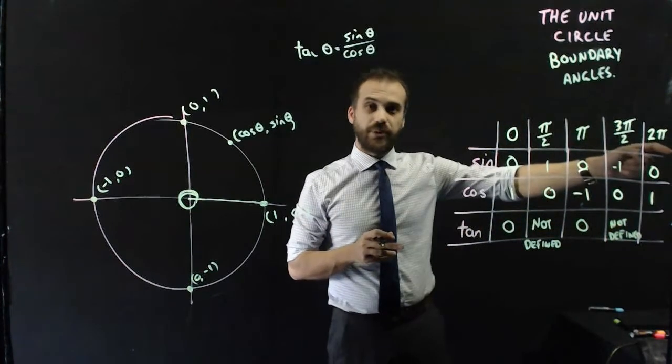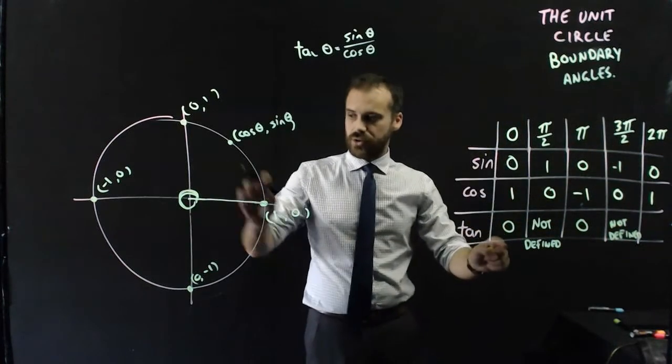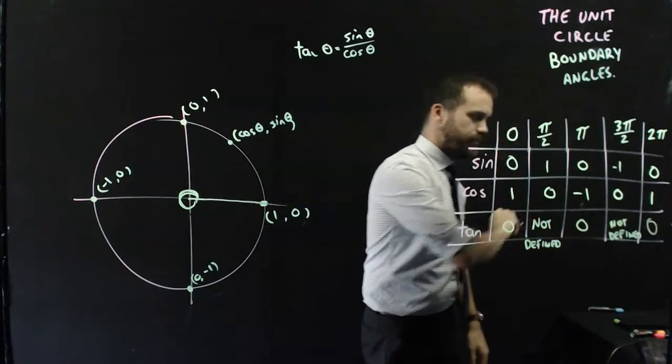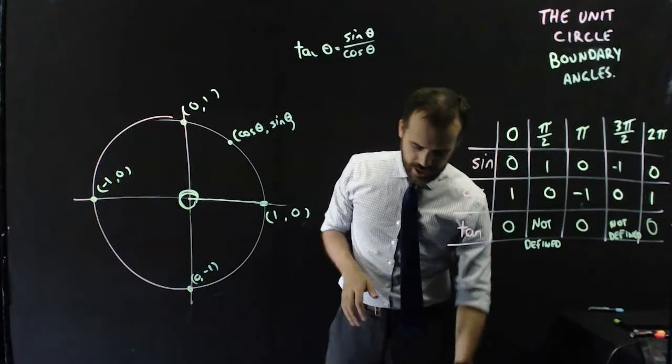And tan of 2 pi is the same as tan of 0, because we're back to where 0 was, so that's going to be 0. Okay, now,